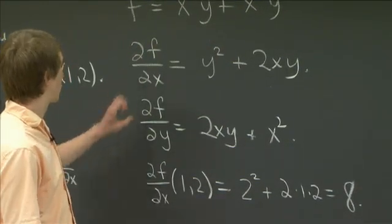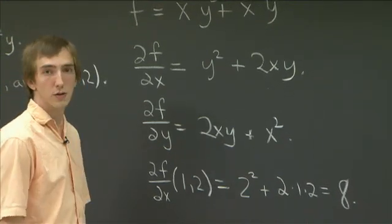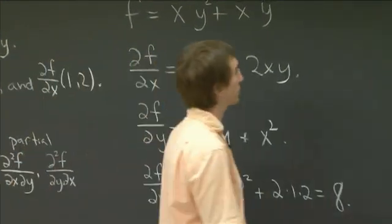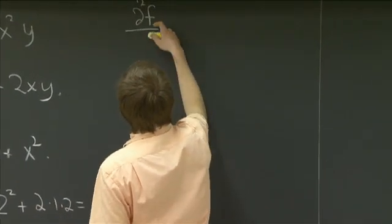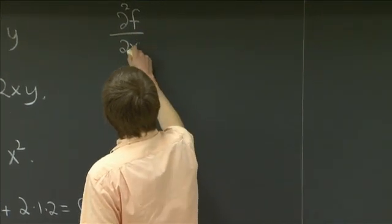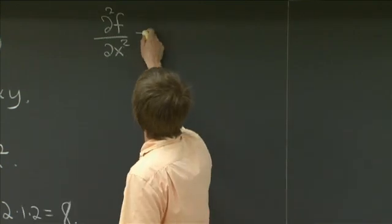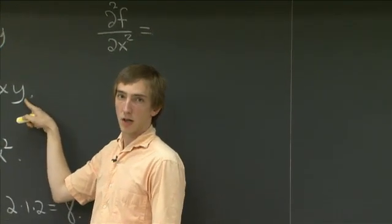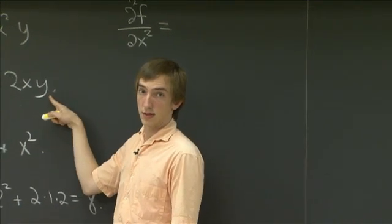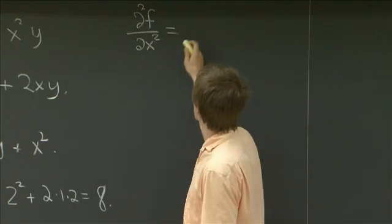So that's computing partial derivatives. Now let's move on and compute the second partial derivatives. So for instance, we want to compute the second partial derivative, both times in the x direction. So all this means is that when we took the first partial, we got a function of x and y, and now we just need to take its partial. So we just need to take the derivative of this again in the x direction.